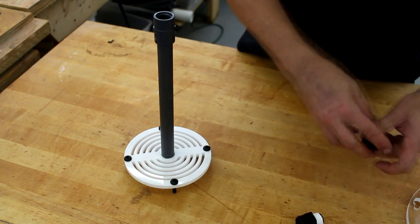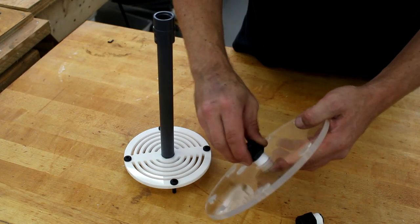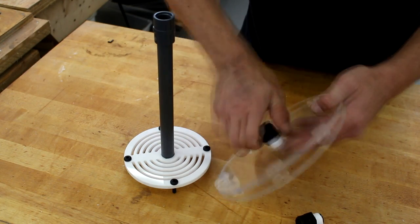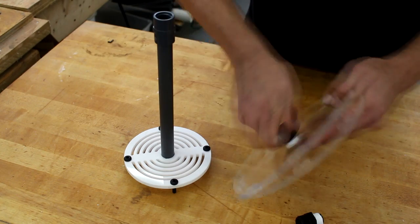Now we can wrap our fittings with Teflon tape and attach to the lid. There's a pocket for the coupling on the underside of the lid so make sure that the fittings are on top.